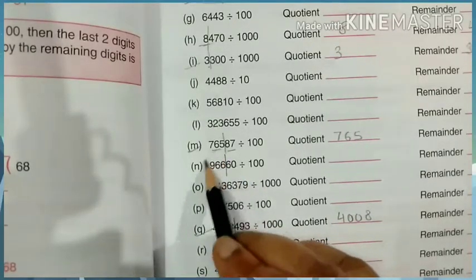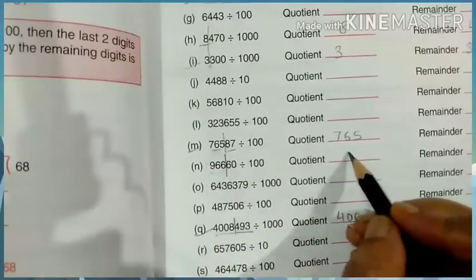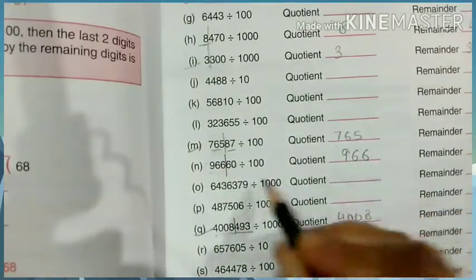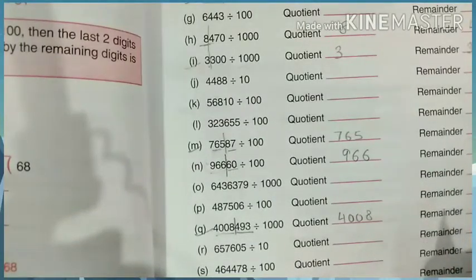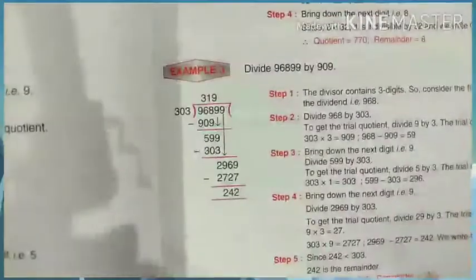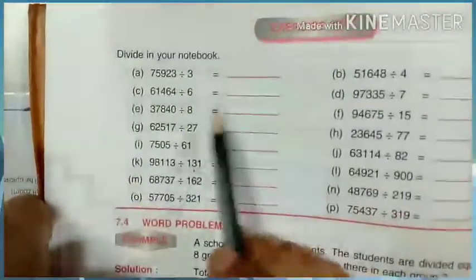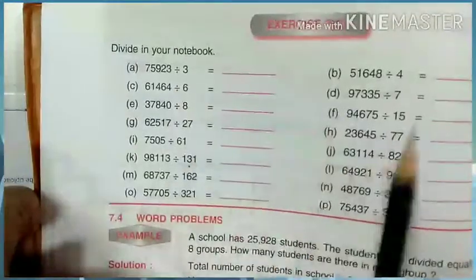So left hand side will be quotient, and the right hand side will be remainder. Are you able to understand? So this exercise 7B is very easy. The same, just as I have taught you to divide. This is the same way.